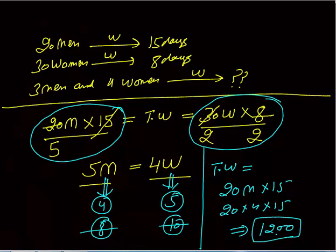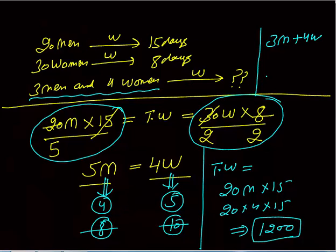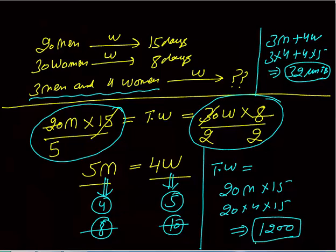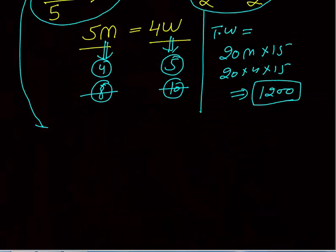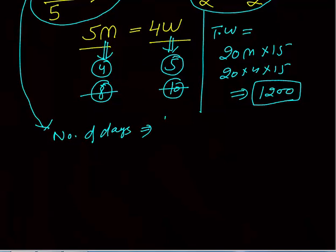Our question was: this total work will be done by three men and four women in how many days? Three men and four women one day work is three m plus four w. Putting values: three into four plus four into five equals twelve plus twenty equals thirty-two units of work per day. To do twelve hundred units at thirty-two per day: answer is twelve hundred divided by thirty-two.